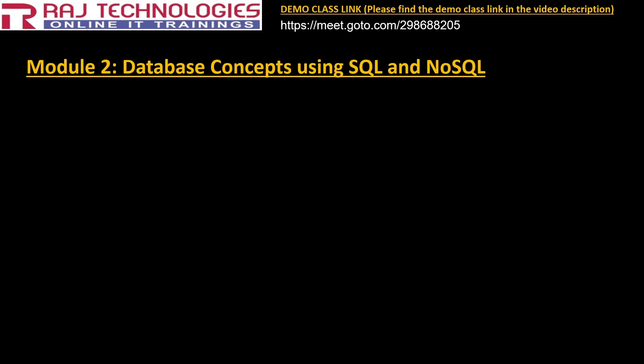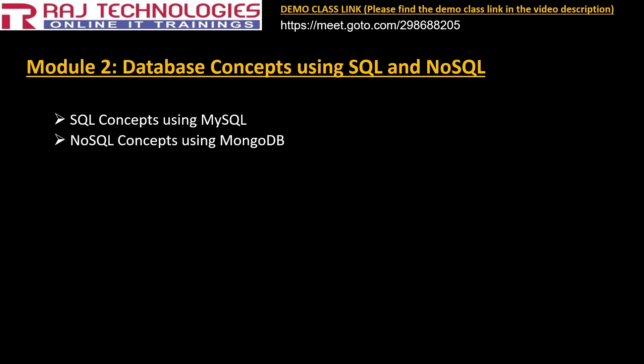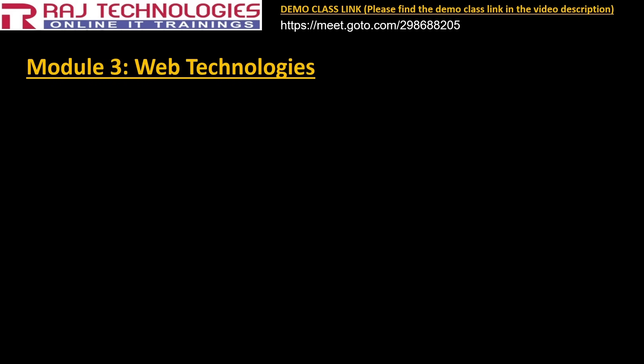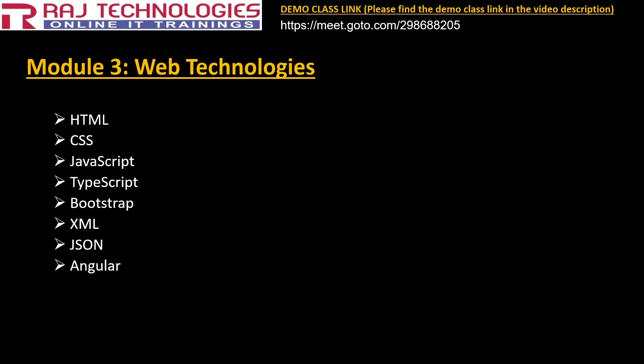Module 2: database concepts using SQL and NoSQL. For SQL we will use MySQL database, and for NoSQL we will use MongoDB. Module 3: web technologies. We are going to learn HTML, CSS, JavaScript, TypeScript, Bootstrap, XML, JSON, and Angular. The purpose of web technologies is web development — the content you want to display onto the browser is handled by these technologies. This is the front-end part; for the front end of your application we are going to make use of web technologies.